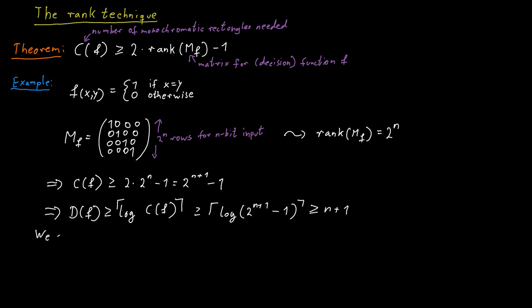Of course, we already know that this is also optimal because the naive solution where Alice just sends all her input to Bob, Bob does the computation and gives the result back to Alice, also requires n plus 1 bits. So n plus 1 bits is possible and we also have a lower bound of n plus 1, so this result is tight.